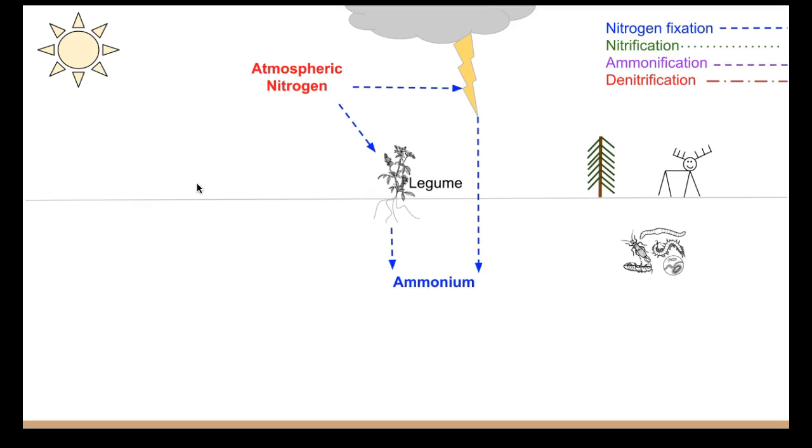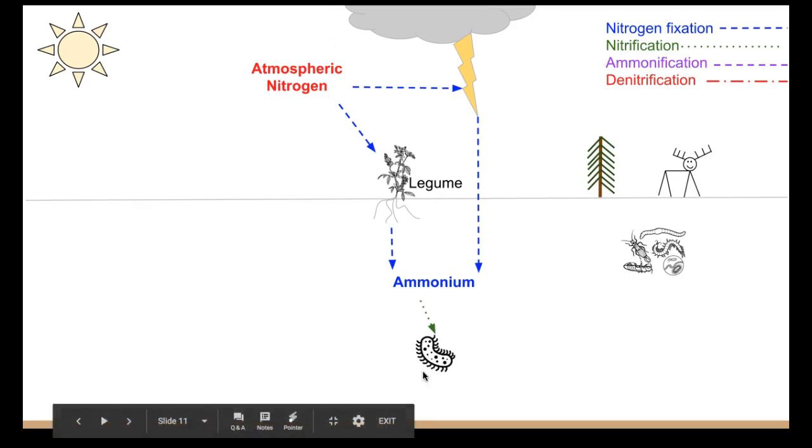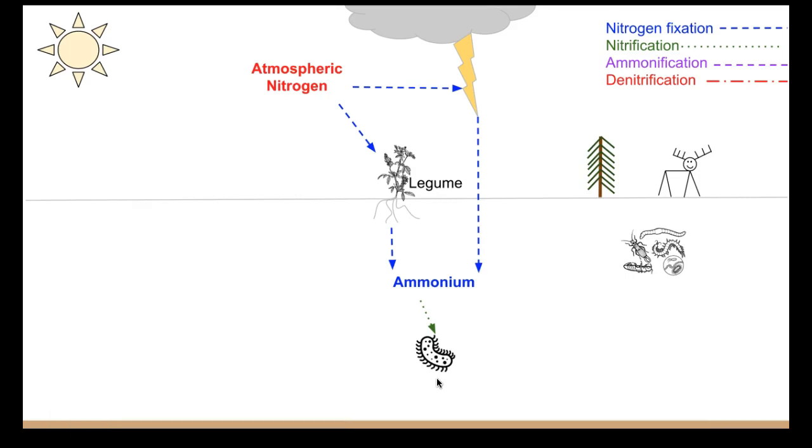Once it's in the soil, that's fantastic. We're taking a step in the right direction, but unfortunately ammonium is not helpful for organisms either. It can make them super sick, so we need to convert this ammonium into actual nitrogen that is usable in the form of nitrate. We're going to use some bacteria and the process of nitrification using bacteria, which we call nitrifying bacteria, and we're going to make some nitrate.